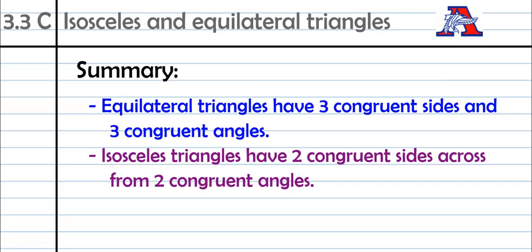And that I believe is it for examples. So in summary, just remember equilateral triangles have three congruent sides and three congruent angles. Not only do they have those congruent sides, but they also have those congruent angles. And then isosceles triangles have two congruent sides that are across the triangle from two congruent angles. So algebra, lots of algebra on these problems, but you guys can handle it with a little practice. Good luck.